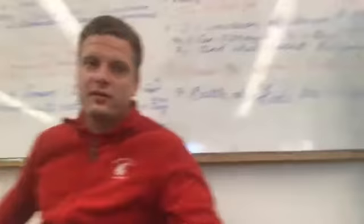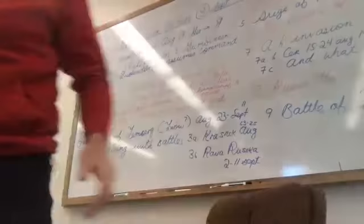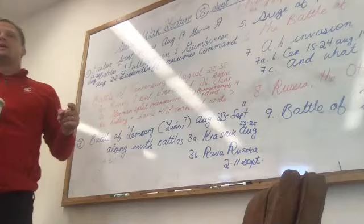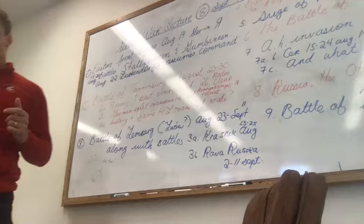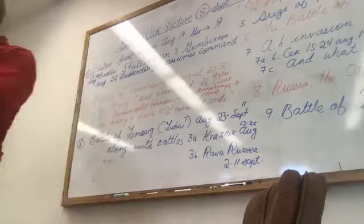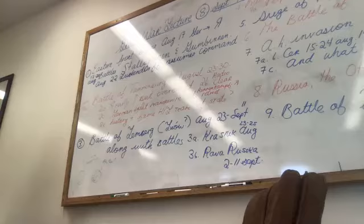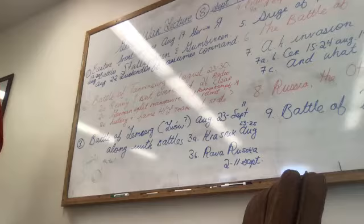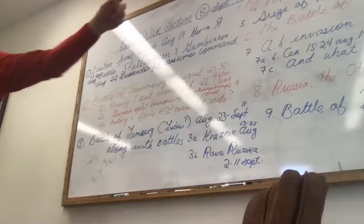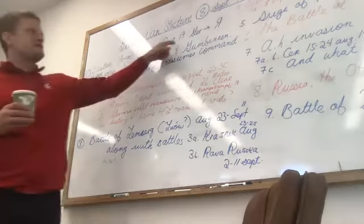What happens at this exact same time in the east is what we're talking about today. The Eastern Front begins August 17th with Germany's attack into Russia. This is all 1914. The first war lecture covered the western front from August 1st through the Christmas truce. Today we're talking about the eastern front during the same time period, though we'll see some 1915 dates as well.